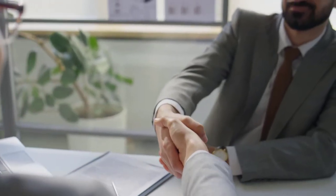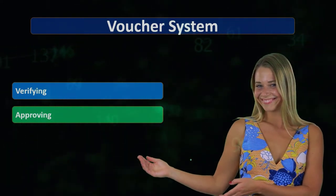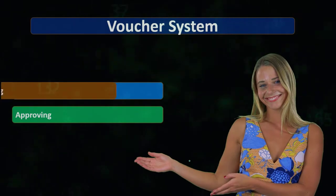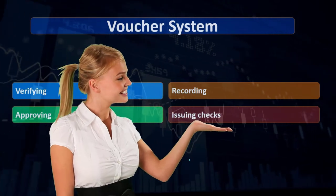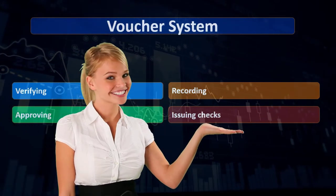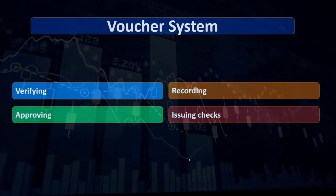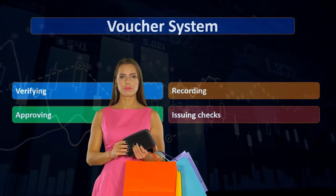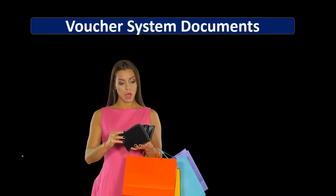Broadly speaking, the components of the system will be to verify what will be purchased, make sure there's an approving process. If one department is asking for purchases, we want to make sure we have an approval process in place. We want to make sure that recording takes place, and then we have the issuing of the checks. Within these components, we'll typically have separation of duties in order to safeguard our assets.